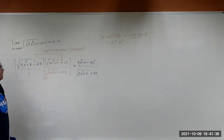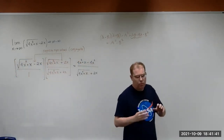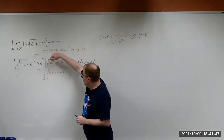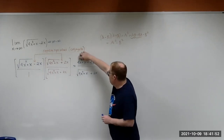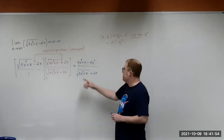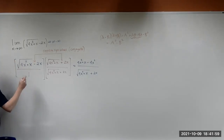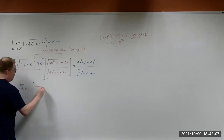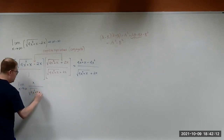Now we have this result. You can see the advantage of using the conjugate: these two terms — the 4x squared and minus 4x squared — cancel out, and that's going to leave us with just x in the numerator. So we can rewrite the limit as x approaches infinity of x over the square root of 4x squared plus x, plus 2x.